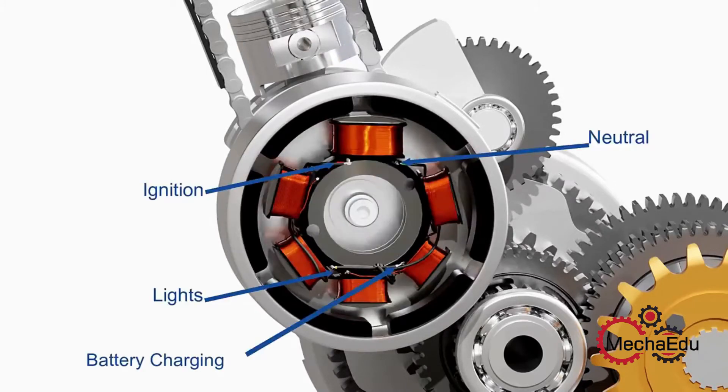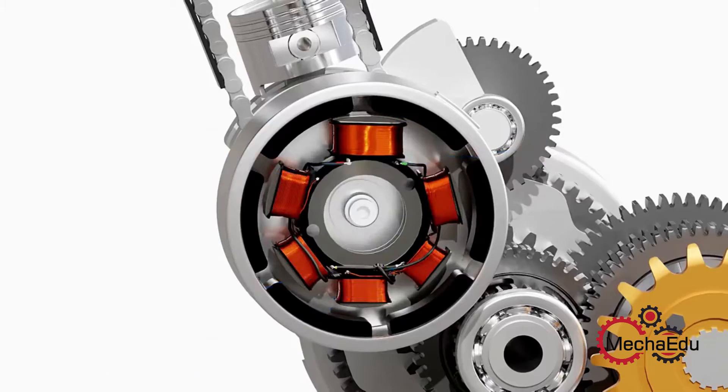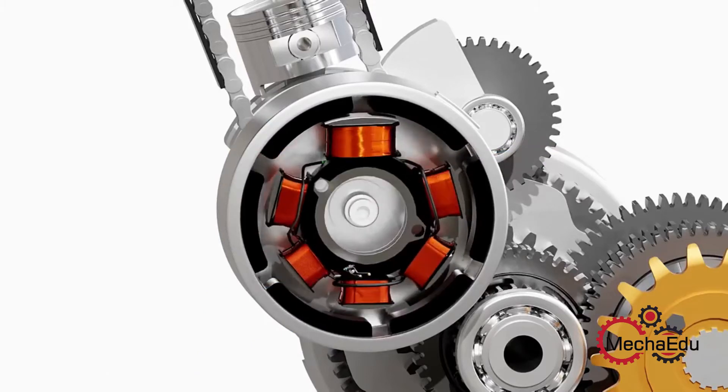Each output from the stator has different purposes as shown here. The output for the ignition purpose is received from the exciter coil. This coil has a denser winding of thinner wire than the other coils to produce higher voltage for the ignition.